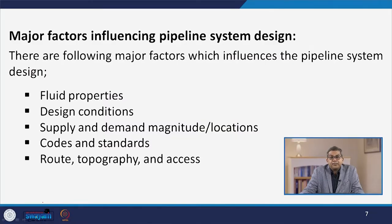There are various major factors influencing pipeline system design. One is the fluid properties — whether compressible, non-compressible, reactive, non-reactive, or with temperature maintenance requirements. Then design conditions: supply and demand magnitude and locations. If you have a very less supply and build a pipeline with a larger diameter, then pumping cost, material cost, and power requirement would be on the higher side. Every country, state, and material has its own codes and standards, which must be followed. Route and topography and access are also core issues.